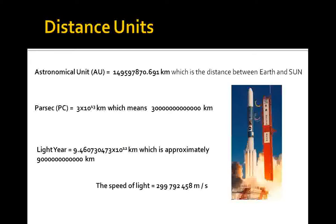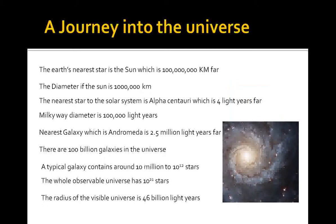Let's have a journey in the universe and see how vast this universe is and see how huge and massive it is. The Earth's nearest star is the Sun, which is 100 million kilometers far, as we said before. This is the astronomical unit, so it's one astronomical unit far from the Earth, and the diameter of the Sun is a million kilometers.